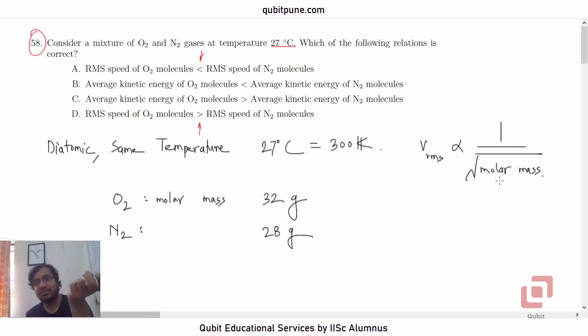The one which has the smaller molar mass will have greater RMS speed. Which one will have greater RMS speed? Nitrogen, because its molar mass is lesser than that of oxygen.